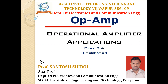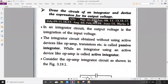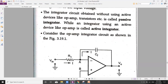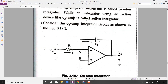Today we'll be covering part 3.4, concentrating on the op-amp as an integrator. In an integrator circuit, the output voltage is the integration of the input voltage — whatever input voltage you give on the input side will be integrated and sent to the output. Since this integrator circuit is designed using an op-amp, it is called an active integrator.